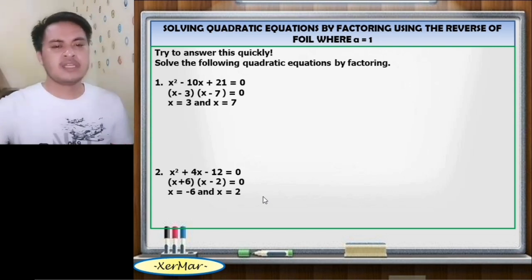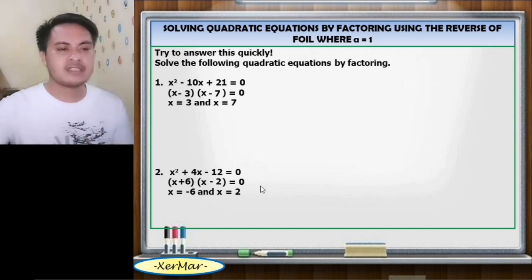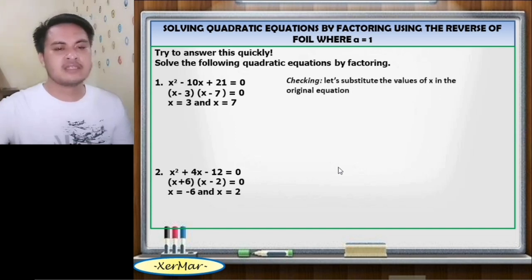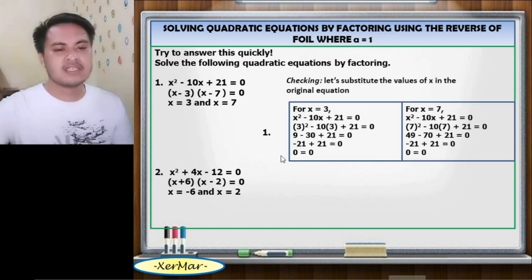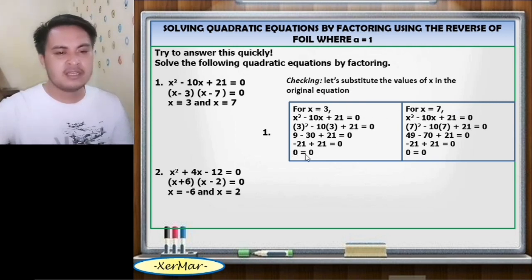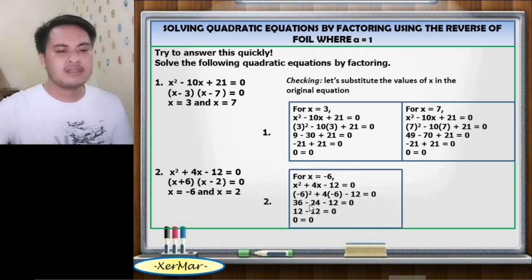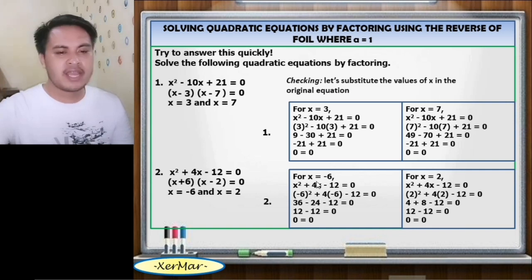If you are going to check, just substitute the values of x into the original equation. For Number 1, checking x equals 3 and x equals 7 both give 0 equals 0 — check. For Number 2, checking x equals negative 6 and x equals 2 both give 0 equals 0 — check.